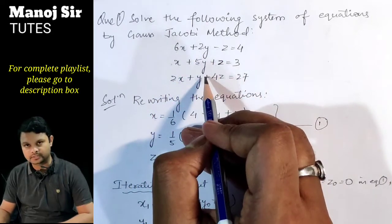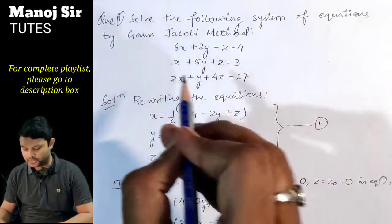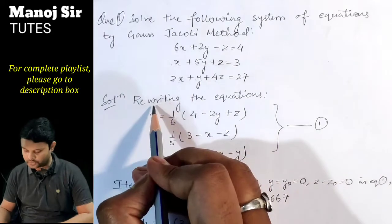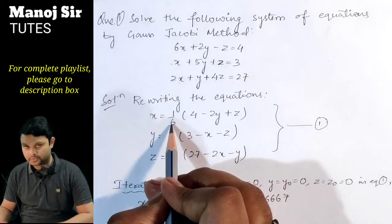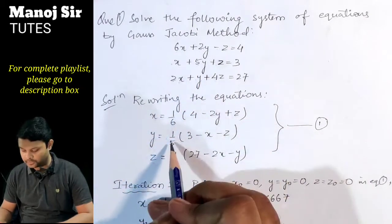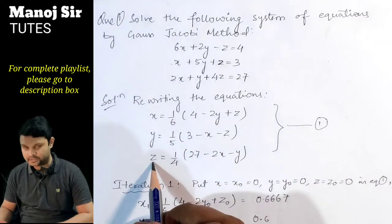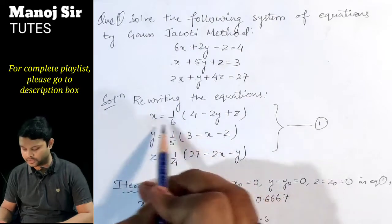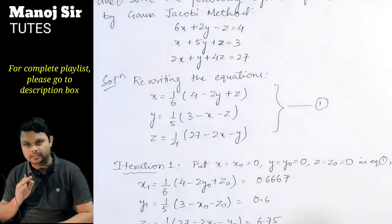If a third equation were written second and vice versa, we would need to interchange them so that diagonal dominance is achieved. Rewriting the equations: x = (1/6)(4 − 2y + z); y = (1/5)(3 − x − z); z = (1/4)(27 − 2x − y). We call this equation set (1).